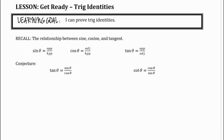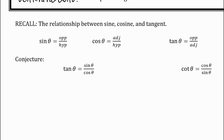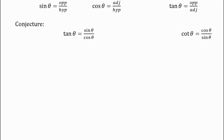Here's the relationship between sine, cosine, and tangent. Remember that based on SOH-CAH-TOA: sine is opposite over hypotenuse, cosine is adjacent over hypotenuse, and tan is opposite over adjacent. The conjecture is that tan equals sine over cosine — this is one of the identities we use to prove further identities in grade 11. We're going to focus on form while doing this.